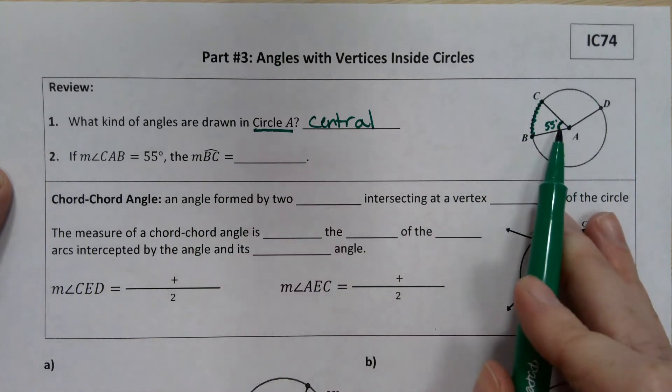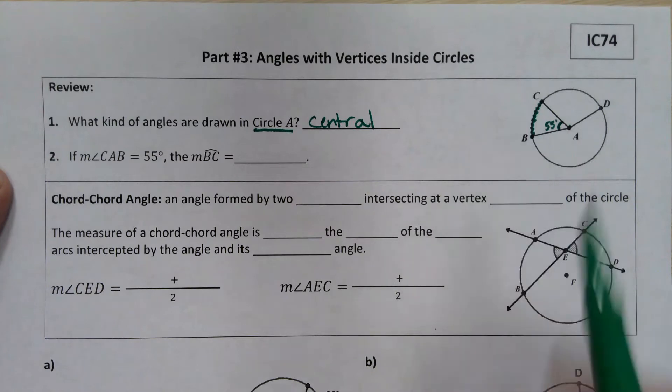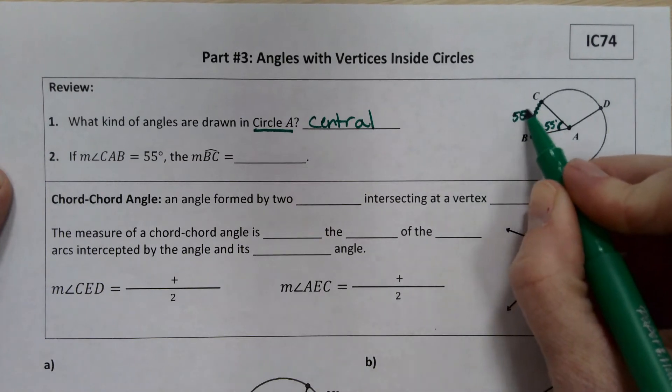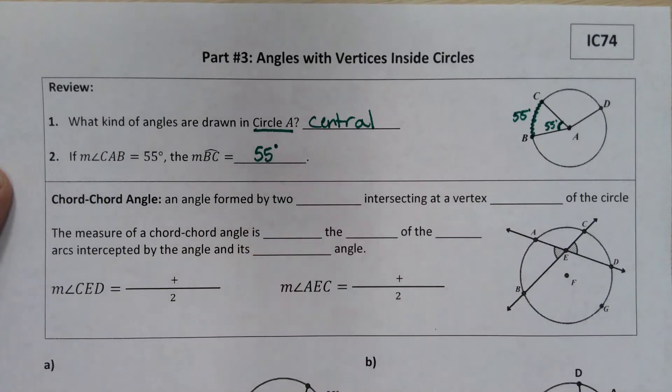If that central angle is 55 degrees, do you remember what that arc measure would be? If you thought 55 degrees, then you are also correct. So central angles and their intercepted arcs have exactly the same measure.